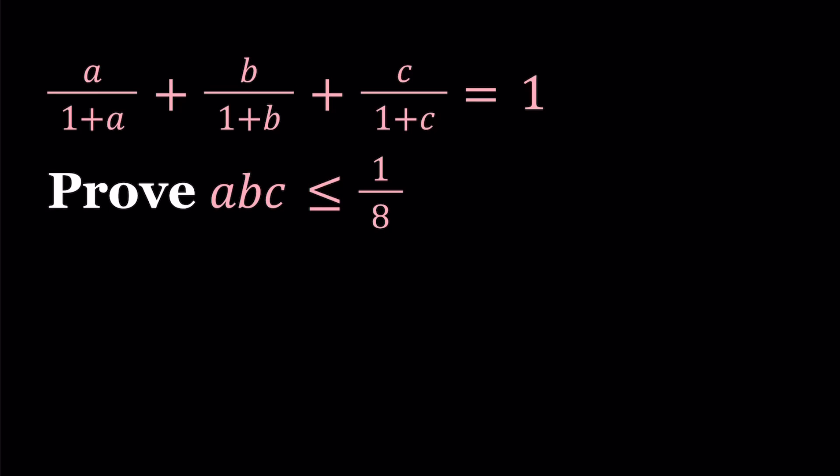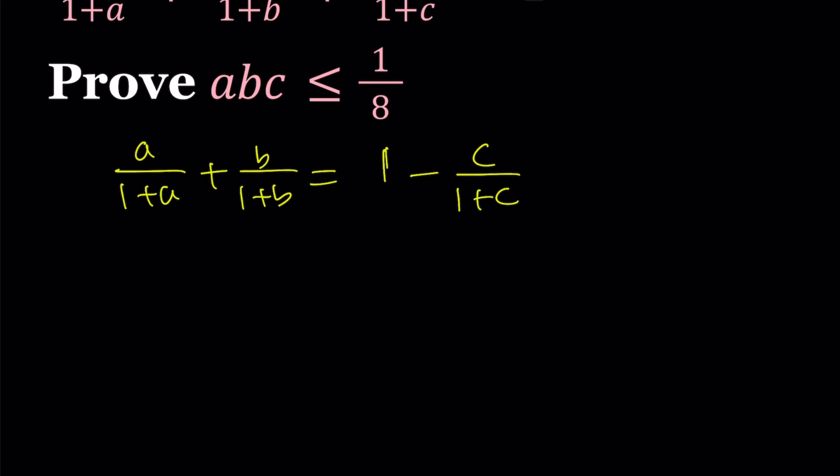So here's what I'm going to do. I would like to put the c on the right-hand side and subtract it from 1. And then make a common denominator on both sides. You can also do all three at the same time, but I just find it easier to do two terms at a time.